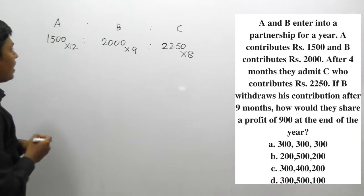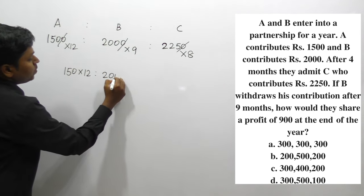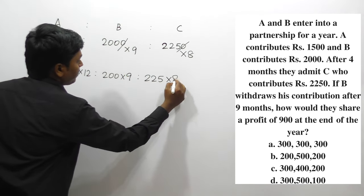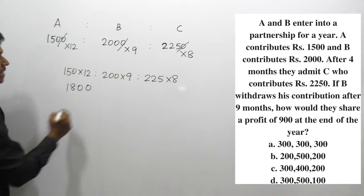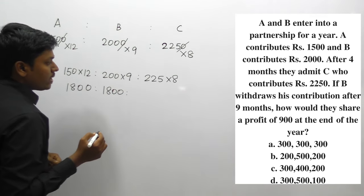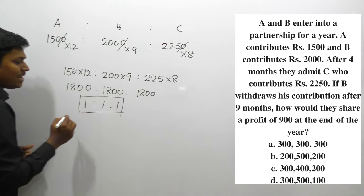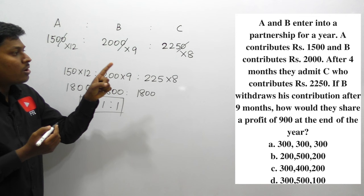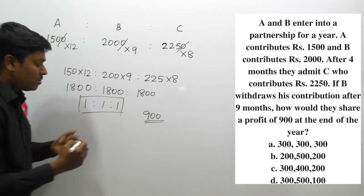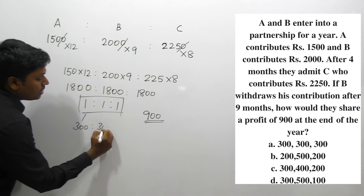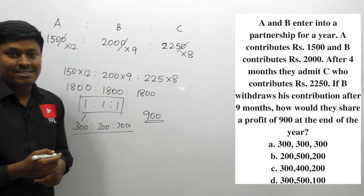Cancelling zeros: 150 × 12 = 1,800; 200 × 9 = 1,800; 225 × 8 = 1,800. So the ratio of shares is 1 : 1 : 1. Since total profit is rupees 900 and shares are equal, A gets rupees 300, B gets rupees 300, and C gets rupees 300.